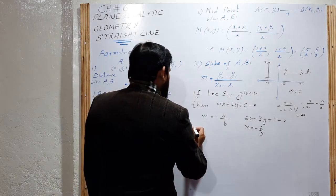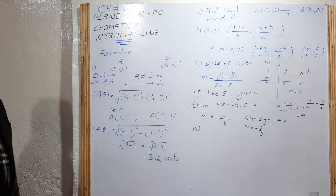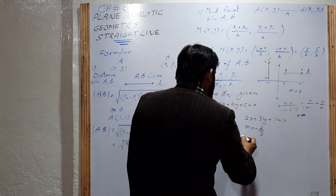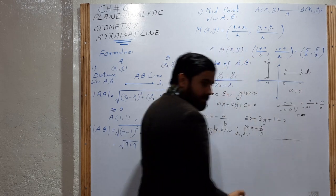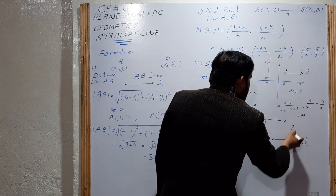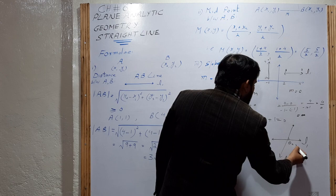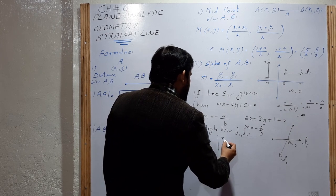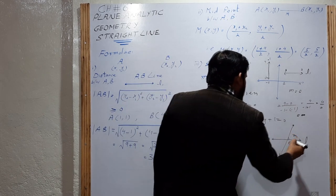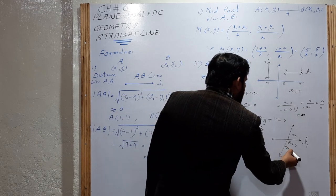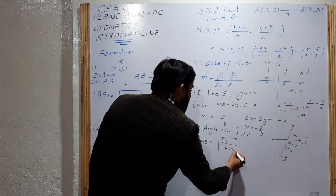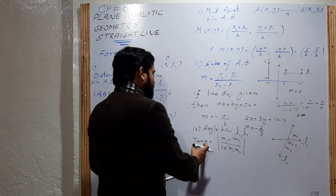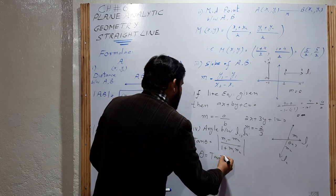These are the four formulas. Next, the fifth formula is the centroid of a triangle ABC. The centroid formula is: centroid = ((x1 + x2 + x3)/3, (y1 + y2 + y3)/3). If three points A, B, C are given, using this formula we can easily find the centroid of the triangle.